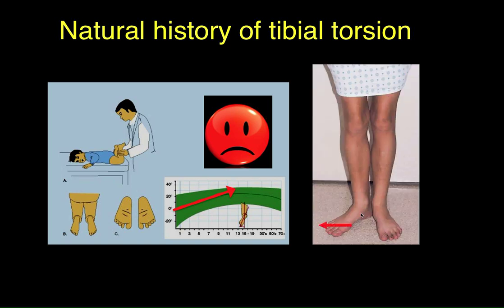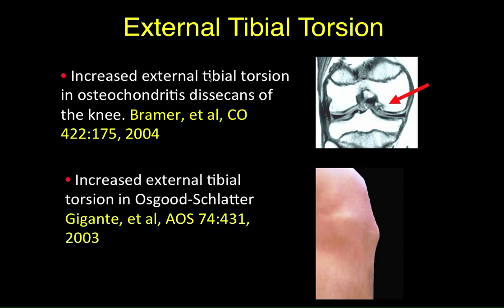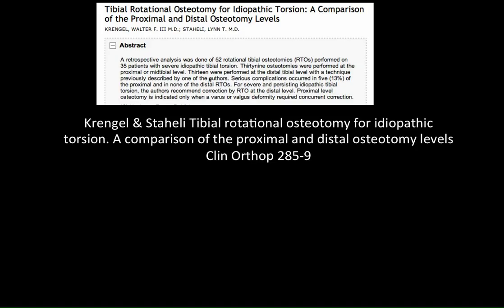These can sometimes cause problems, not only with gait and difficulties with getting through narrow spaces, but also with other associated problems. For instance, osteochondritis dissecans is one example, and increased incidence of Osgood-Schlatter disease is another, perhaps because of the changed mechanics of the leg.